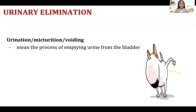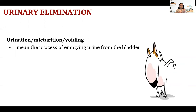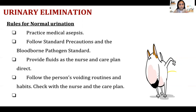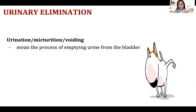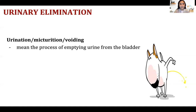A normal person will have 1,500 ml of urine for 24 hours. If your patient has a urinary catheter and you need to monitor every one hour, the patient should have 30 ml of urine per hour. Your urine should be yellow in color and have no distinct or foul odor, and the consistency should be clear.